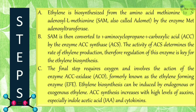Ethylene is biosynthesized from the amino acid methionine. In the first step, methionine is converted into S-adenosyl-L-methionine, or SAM (also called AdoMet), by the enzyme SAM adenosyl transferase. In the second step, SAM is converted to 1-aminocyclopropane-1-carboxylic acid, or ACC, by the enzyme ACC synthase (ACS). The activity of ACS determines the rate of ethylene production. The final step requires oxygen and involves the enzyme ACC oxidase (ACO), formerly known as the ethylene-forming enzyme (EFE).